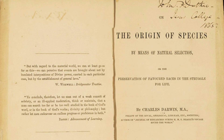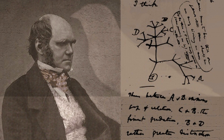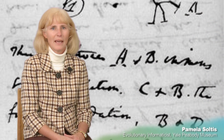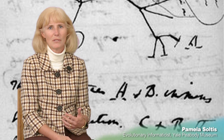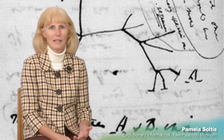The concept of a tree of life was first put forward very explicitly by Darwin, even in some of his notes, 20 years or more before the publication of The Origin of Species. In fact, the only figure in The Origin of Species is actually a phylogenetic tree, which shows a branching pattern that depicts our ideas about how species are related to each other.